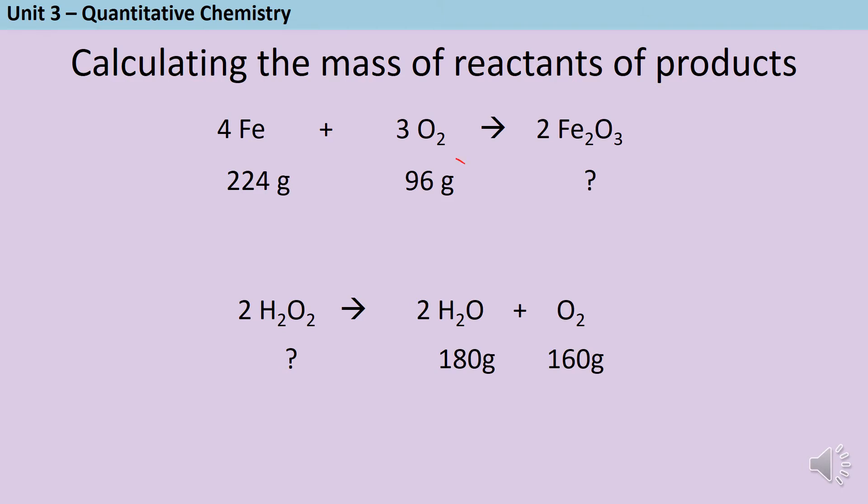In this first example, if I add together the mass of the iron and the oxygen, then I get a total of 320 grams. And so because I know that the reactants and the products must have the same mass, that means I must have 320 grams of iron oxide.